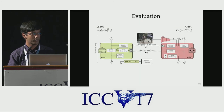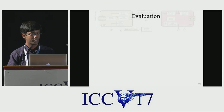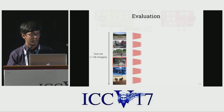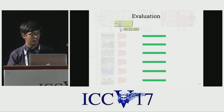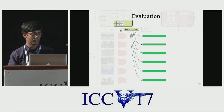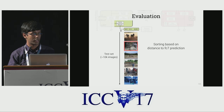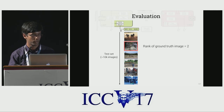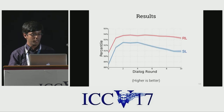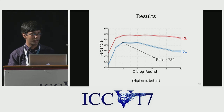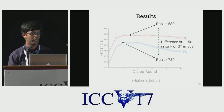For evaluation, the secret image Abot has access to comes from a test set of 10,000 images. We extract FC7 vectors for each image, compute the distance from the predicted feature vector to each ground-truth FC7 vector, sort images based on this distance, and compute the rank of the ground-truth image. The supervised pre-trained agents get a best mean rank of 730 out of 10,000, while the RL agents get a best rank of 580 — a difference of 150 in rank.